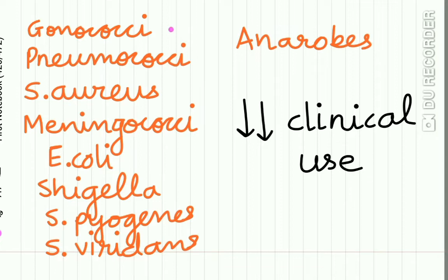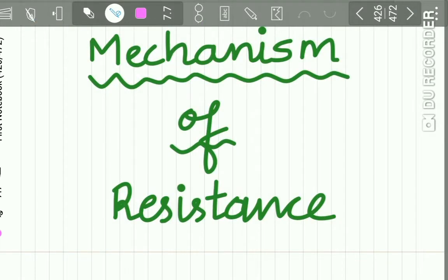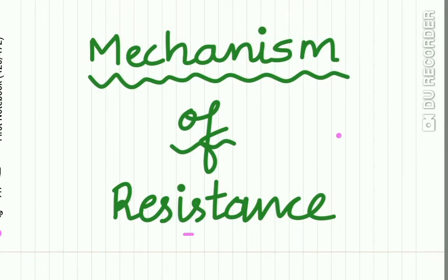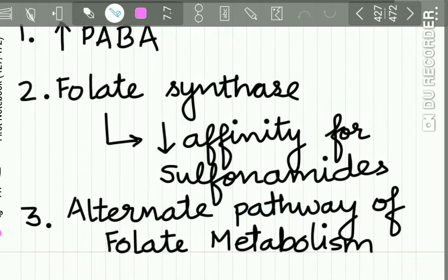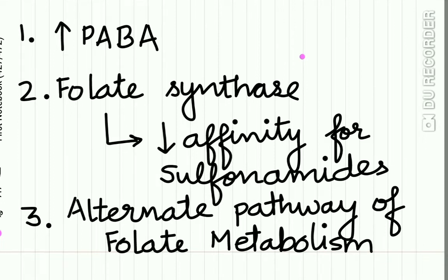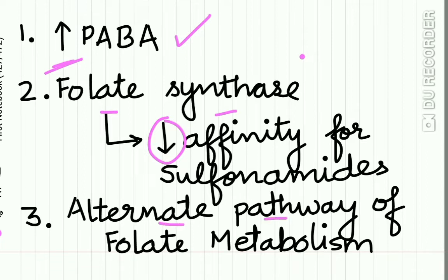Resistant bacteria include gonococci, the majority of S. aureus, meningococci, E. coli, Shigella, Streptococcus pyogenes, Streptococcus viridans, and all anaerobes. This resistance reduces clinical use. The mechanisms of resistance are: first, resistant bacteria produce more para-aminobenzoic acid; second, resistant bacteria produce folate synthase enzyme with reduced affinity to sulfonamides; and third, resistant bacteria adopt an alternative pathway for folate metabolism.